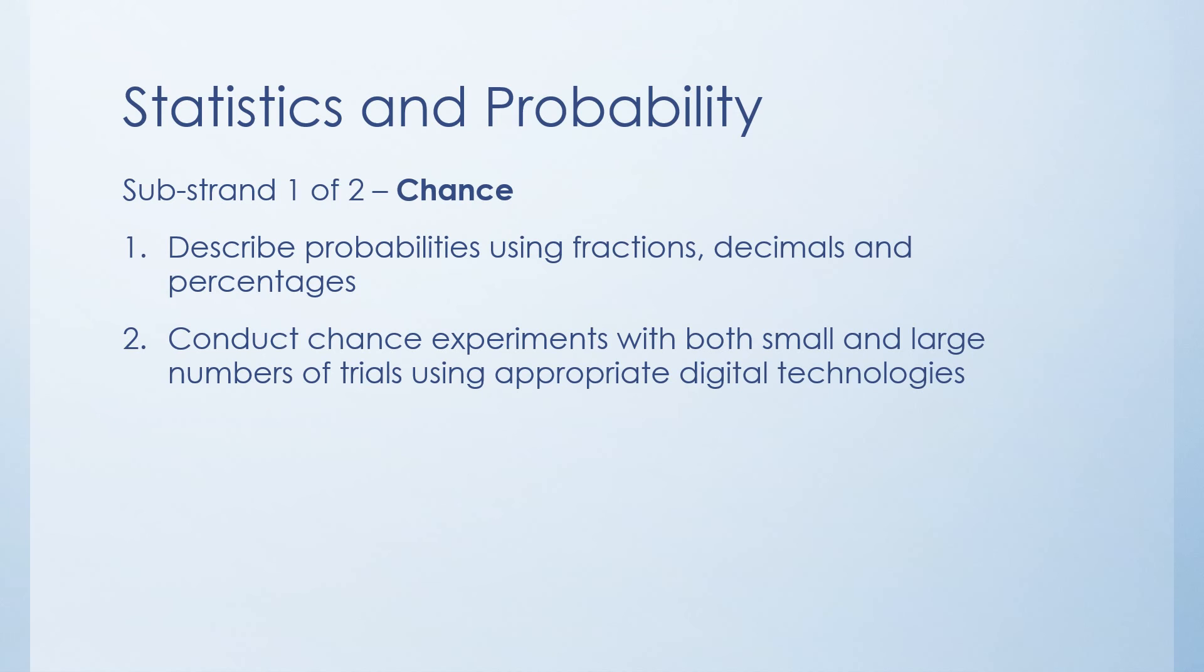And the next one will be conduct chance experiments with both small and large numbers of trials using digital technologies. So there might be programs on the computer or the ability to be able to record things in a better way, doing a number of trials of chance experiments to see what ends up happening. The third one is comparing observed frequencies across experiments with expected frequencies. So that's really just about making observations between what you'd expect to happen and what actually happens. So like I mentioned with the coins earlier, if you flip a coin a hundred times, you'd expect there to be 50 heads. But maybe you end up doing it and it only ended up heads 47 times. And so then you have the opportunity to observe what happened and then have a bit of a think about why.